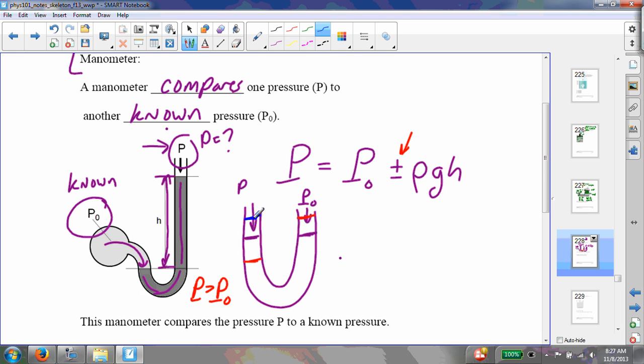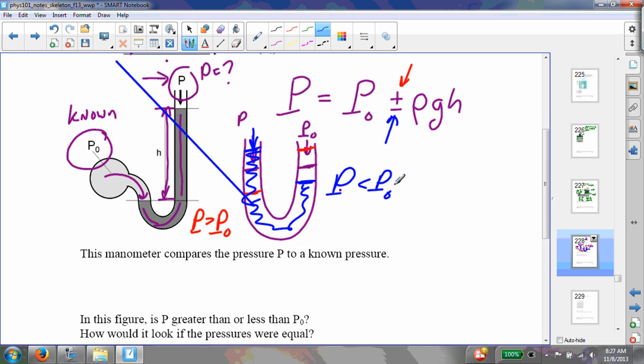Now if it was the opposite way, let's say that over here my water level came here or whatever the liquid is, and over here it was there. Now in this case, P would be less than P naught because you can see that this pressure would not be strong enough to push the water liquid up to the same level. So P is less than P naught. In that case, you would use the negative here. So the manometer just compares a known pressure to an unknown pressure.